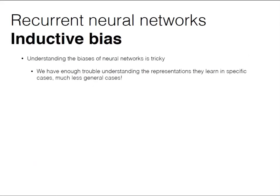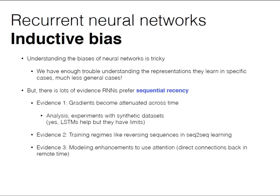Let's talk about inductive bias in RNNs. Understanding the biases of neural networks is tricky — we have enough trouble understanding the representations they learn in specific cases from specific data. Inductive bias is about what they learn in general from data in general, and characterizing that is fundamentally hard. We don't really have the tools yet. However, there is a lot of evidence that RNNs prefer sequential recency.